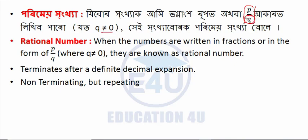Numbers written in fractions or in the form of P by Q, where Q is not equal to 0, are known as rational numbers. For example, 1 by 3, 5 by 4, 0 by 2 are rational numbers.